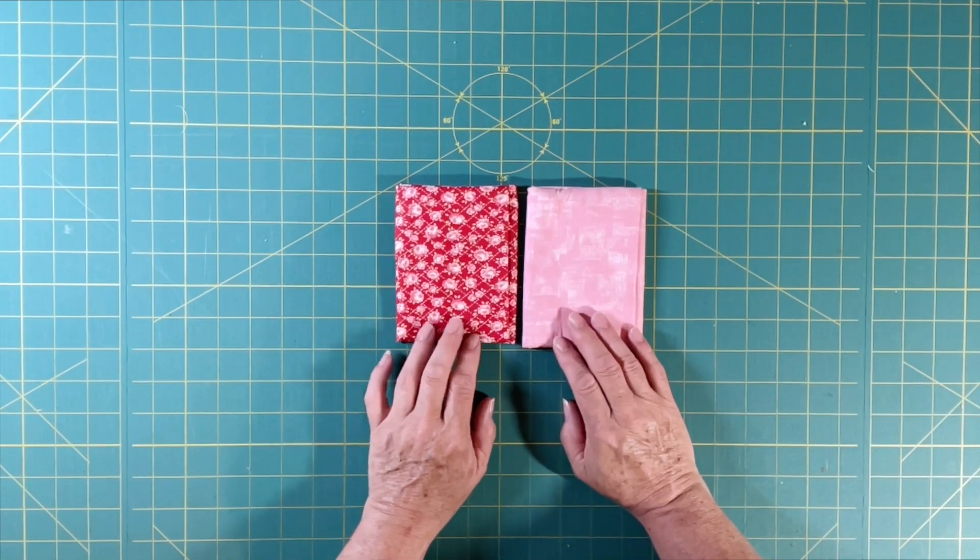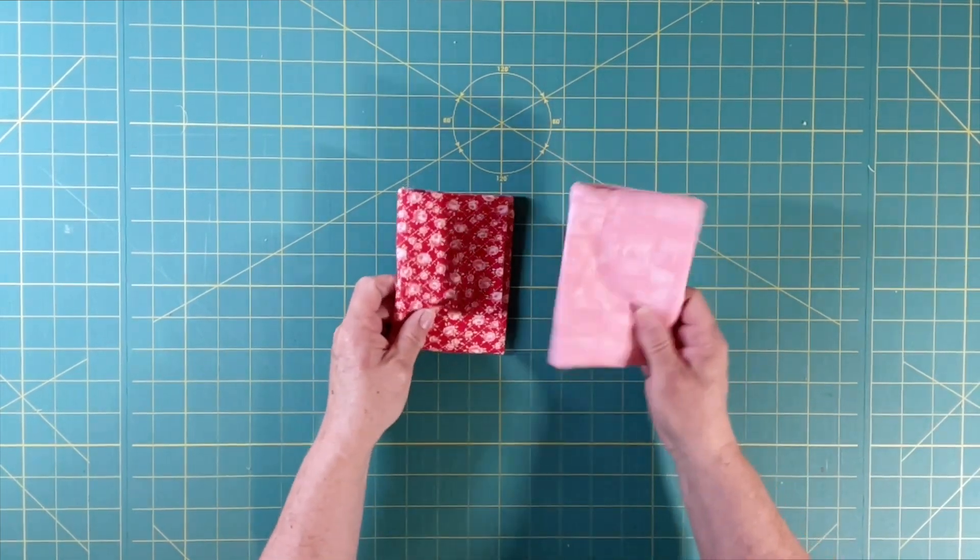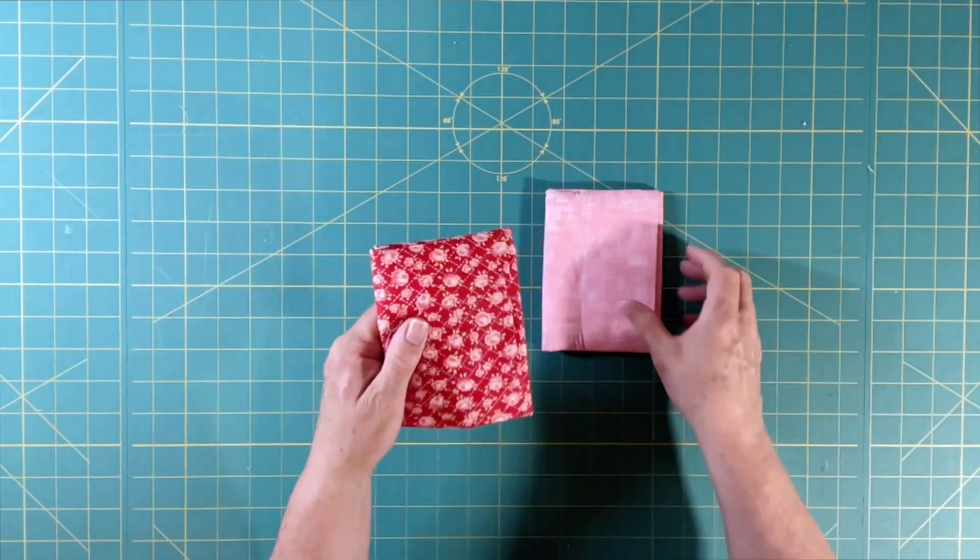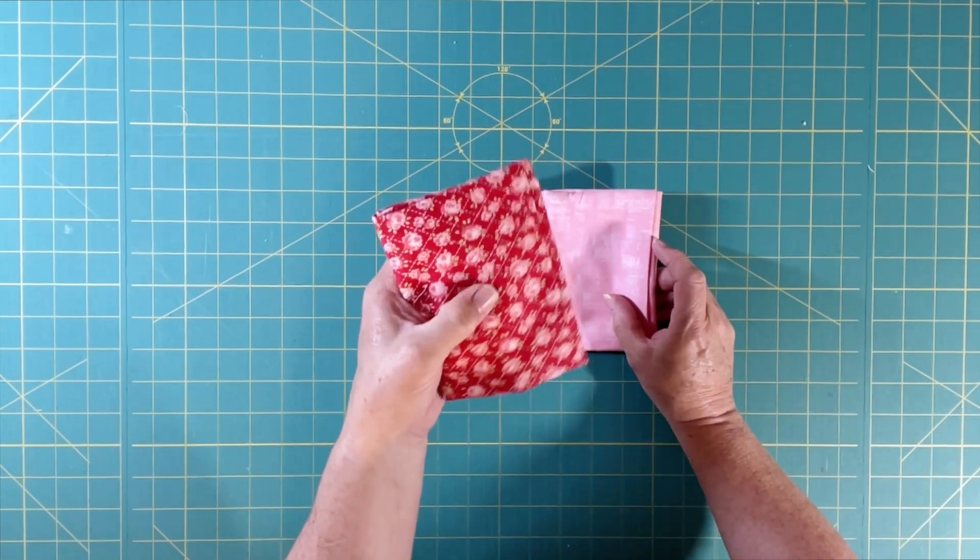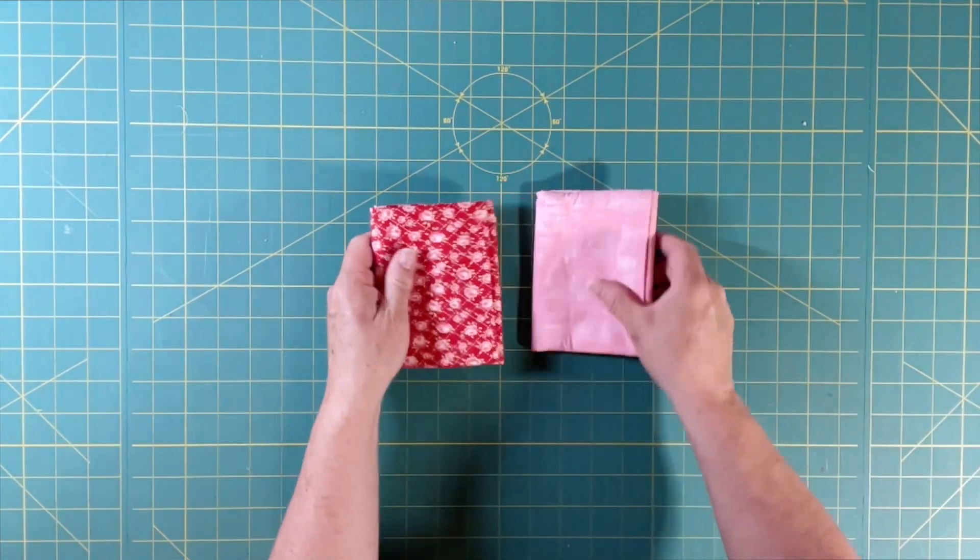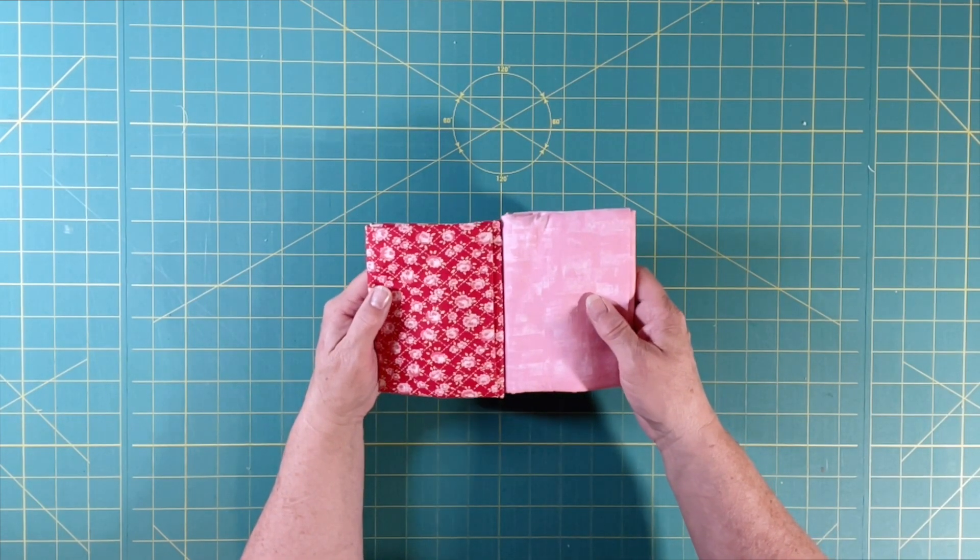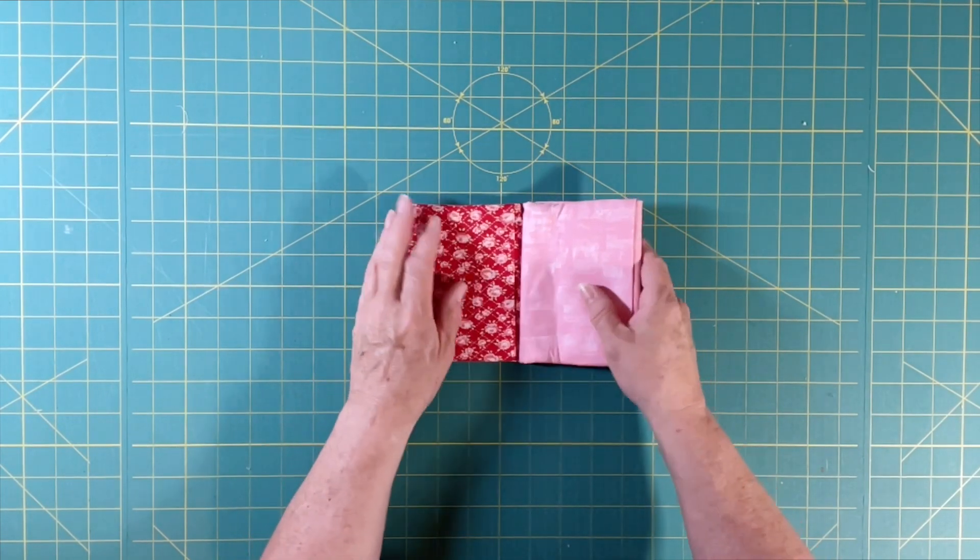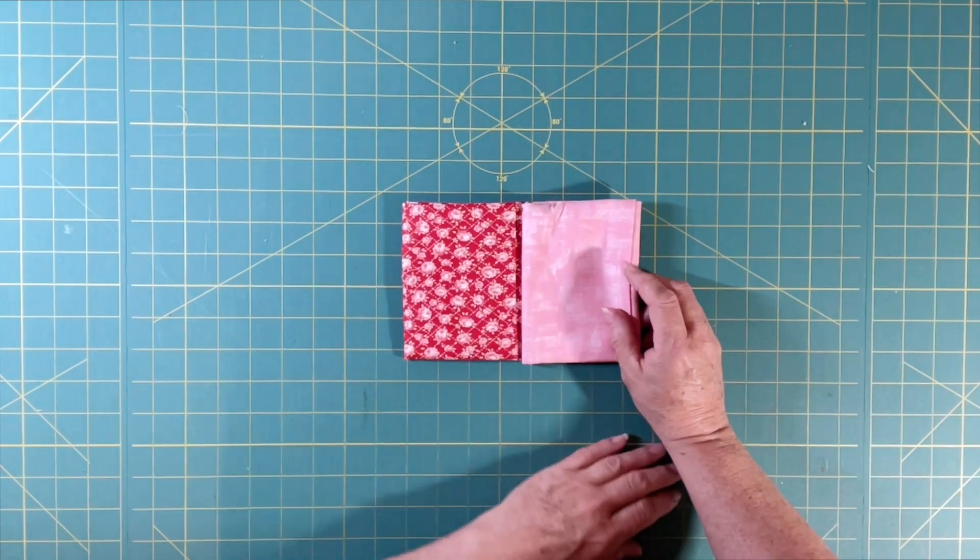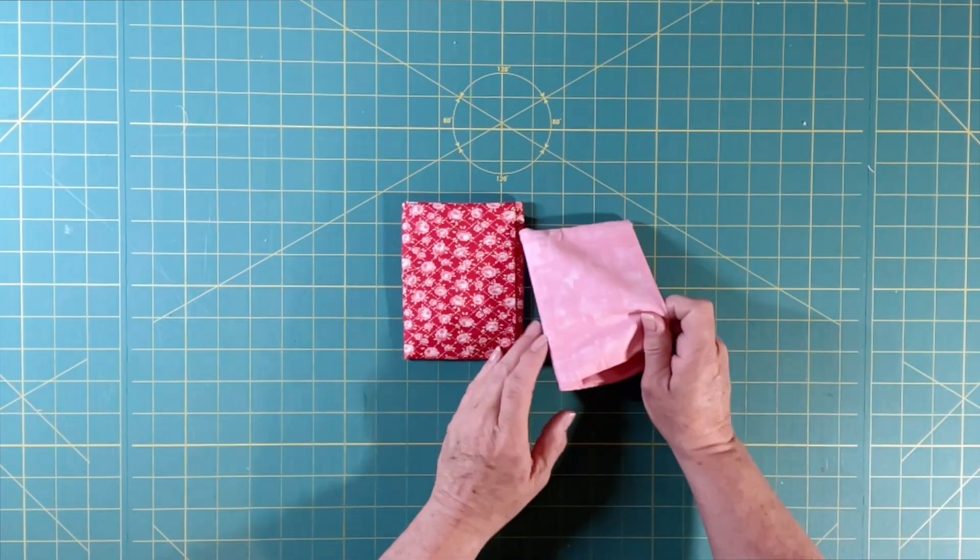I have a pink and then a pink and red dark here. This kind of borders on a medium to a dark, but my pink is light enough that it's a good enough contrast. On your half square triangles you want to have some contrast, so I'm going to go ahead and open these up.